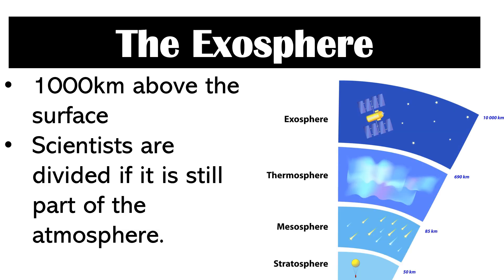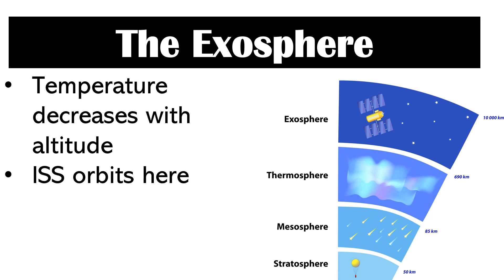The exosphere is said to start 1,000 kilometers from the ground. Scientists are divided on whether this is still part of the atmosphere, because of the very limited amount of gases present here. Additionally, the temperature in the exosphere decreases as you go higher.